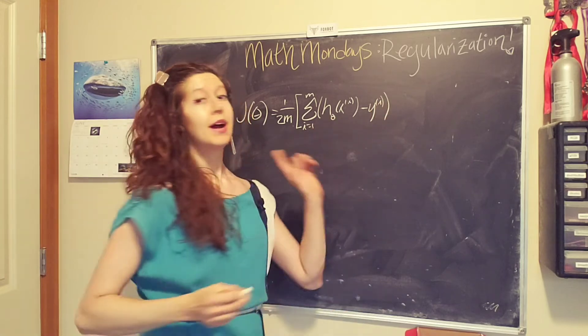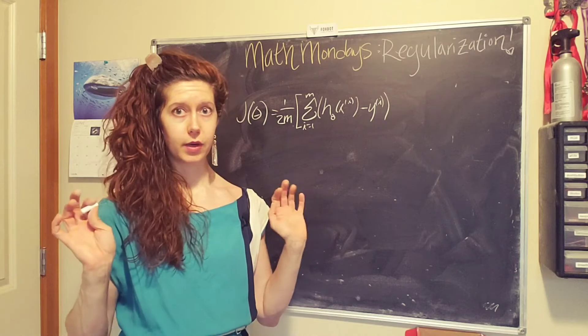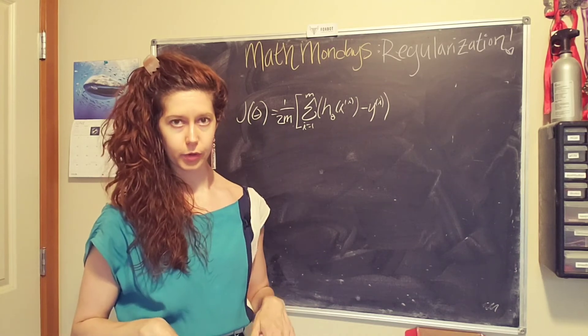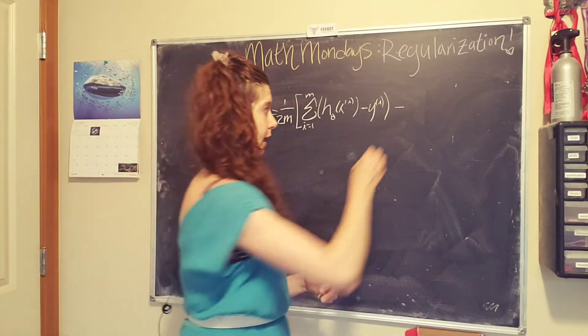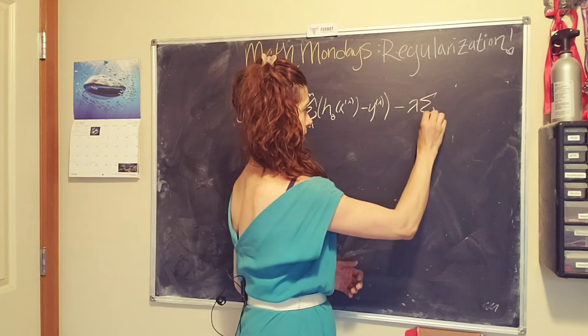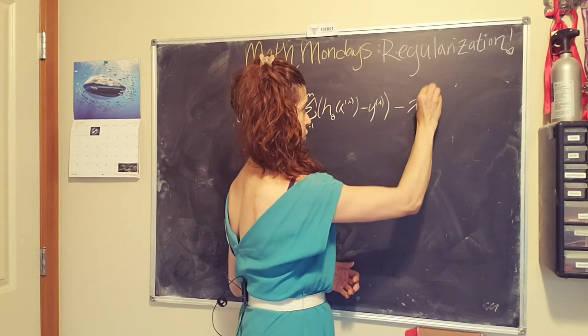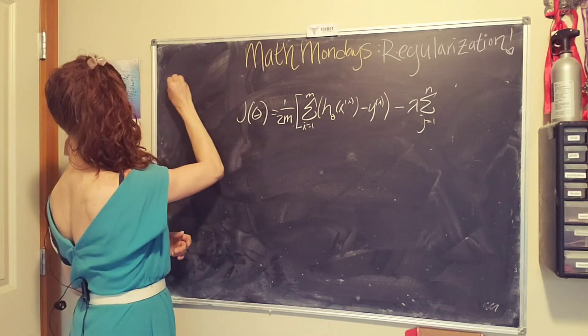Now we're going to add a term to kind of keep these parameters from getting too large. So we're going to add like a penalty if the parameters get too large. We're going to sum from j equals 1 to n where n is the total number of parameters.